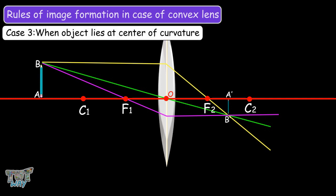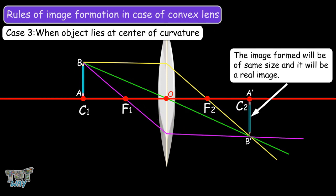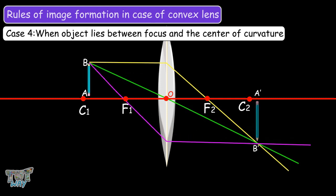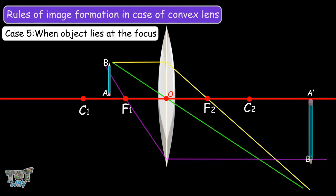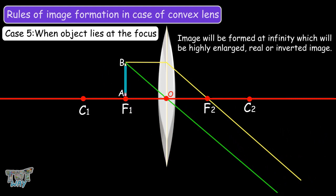If you place the object at the center of curvature, the image formed will be of the same size and it will be a real image. If you place the object between the focus and the center of curvature, the image will be formed beyond C2 and will be highly enlarged, real, and inverted. If you place the object at the focus, the image will be formed at infinity and will be highly enlarged, real, and inverted.